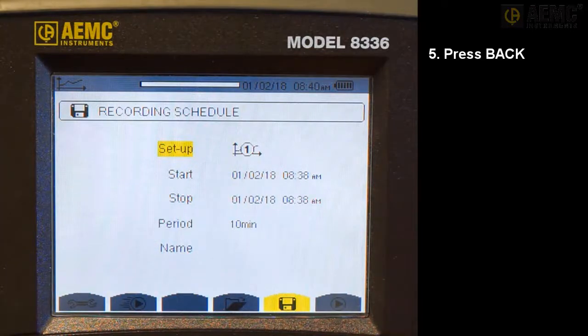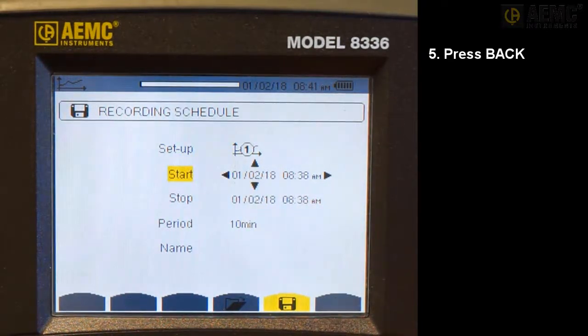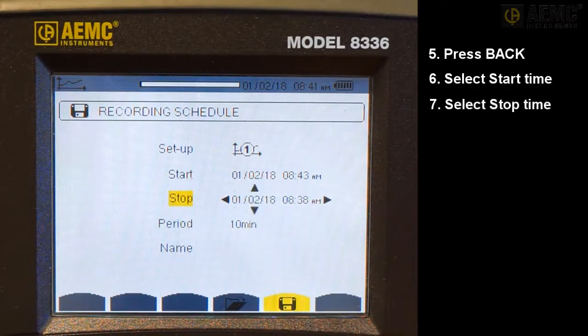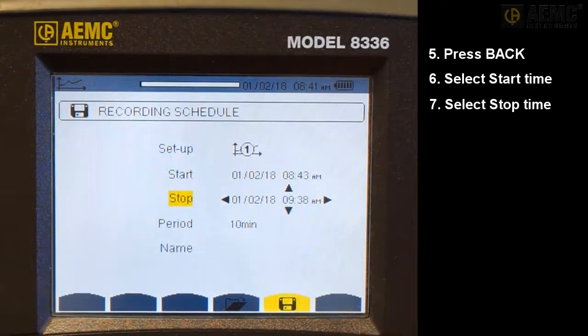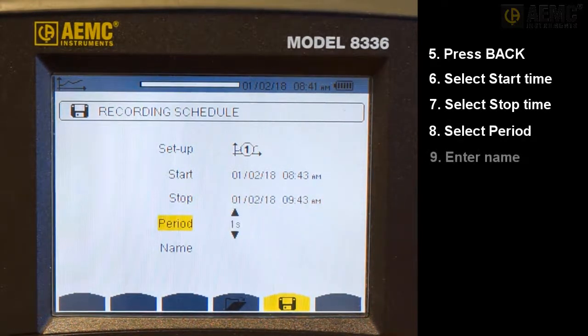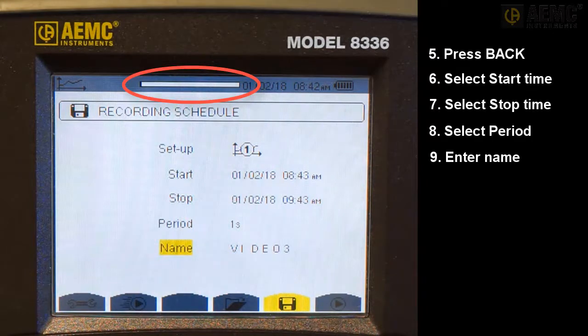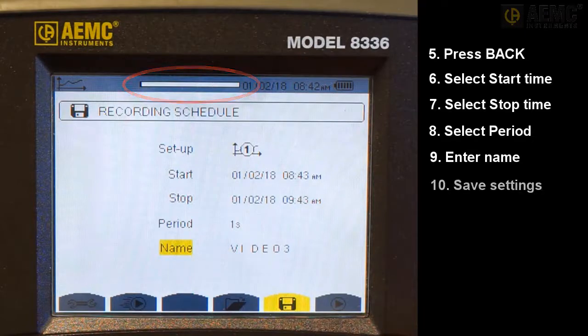Use the arrow and Enter buttons to highlight, select, and edit the Start and Stop fields. For our demonstration, we will set Start for a few minutes past the current time, and stop one hour past the start time. We will also set the period to one second, and give the recording the name Video 3. Note the Memory Usage bar at the top of the screen. This indicates how much memory is available for storing recordings. If this indicates little free memory remains, return to the Recording List screen and delete one or more stored recordings. Press the last yellow Function button on the right to write the settings to the instrument.